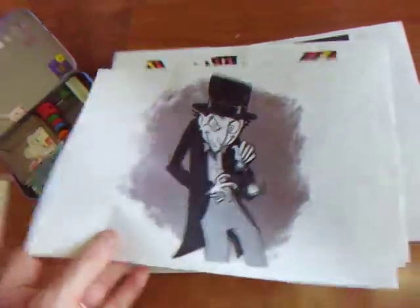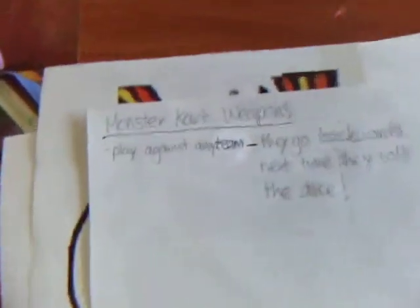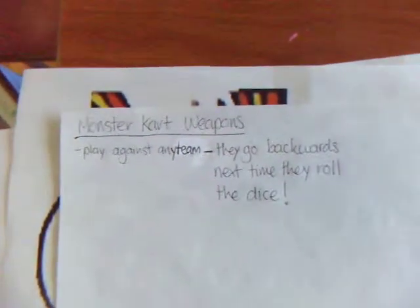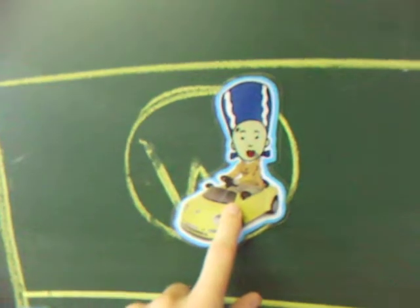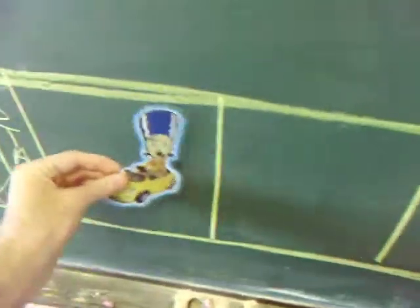The Hypnotist, the Evil Hypnotist. You can play it against any team and they go backwards the next time they roll the dice. So if you played the Evil Hypnotist on this team, for example, on their next move, they would go backwards five places. One, two, three, four, five.